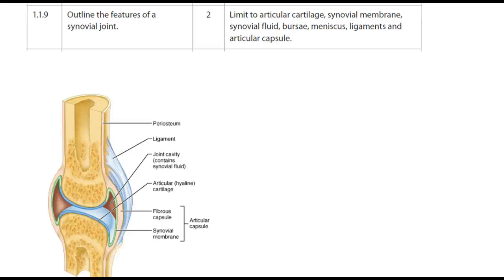This screencast is looking at the features of a synovial joint. A synovial joint is a freely movable joint. Unlike our cartilaginous or fibrous joints — a fibrous joint offering no movement, a cartilaginous joint offering some very small amount of movement — synovial joints are freely movable.